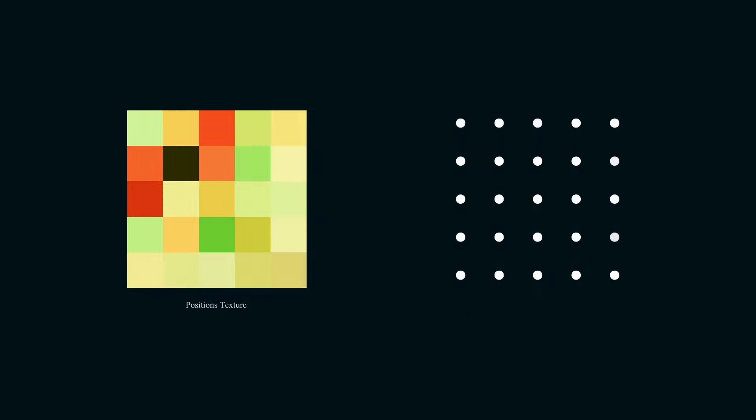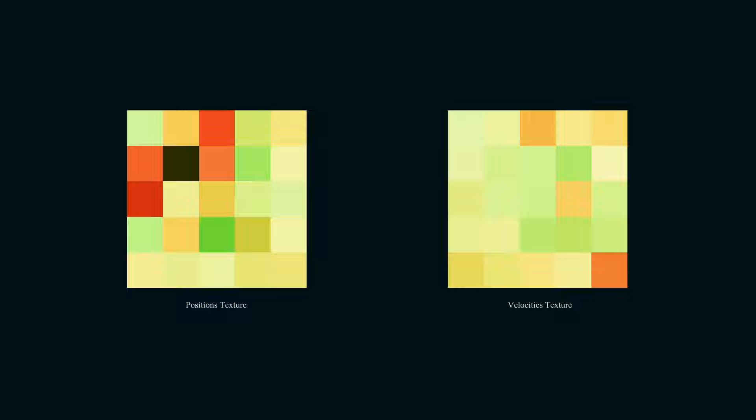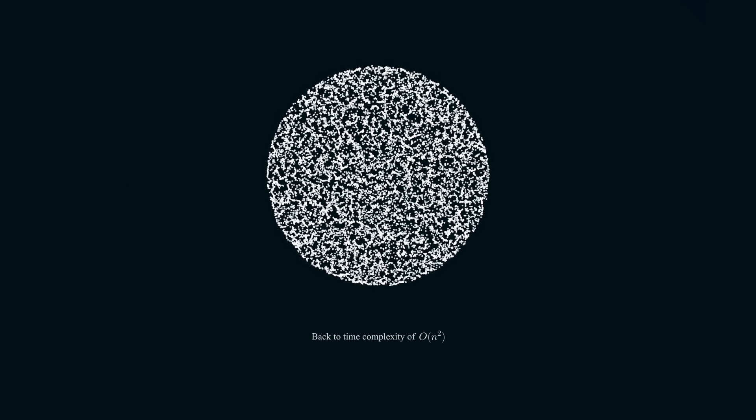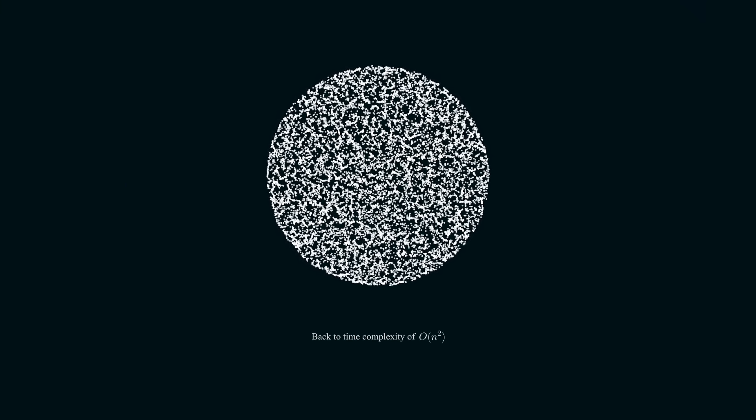GPU and its parallel processing nature would be perfect for the N-body problem. A particle already knows how to read its position from an image. It can also loop through that image to get the positions of all other particles. All that's left is to calculate the force and save the velocity into another image. On each frame, the position moves itself by the velocity amount, and the velocity program uses the current position to decide its next value. This brute-force approach means we're back at O(n²), but the GPU can handle it very well.